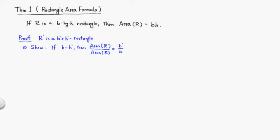Let's look at Theorem 1: the rectangle area formula. This is a very familiar formula. If you have a region R which is a b by h rectangle, then its area is base times height, b times h.